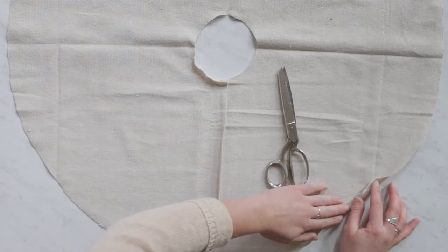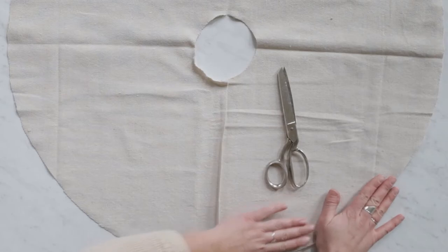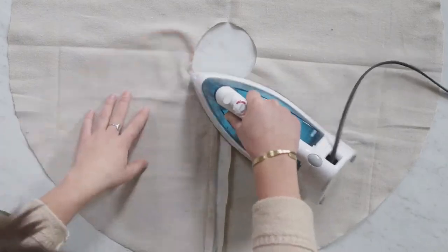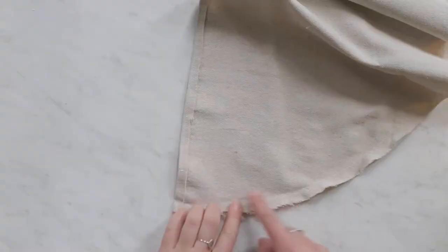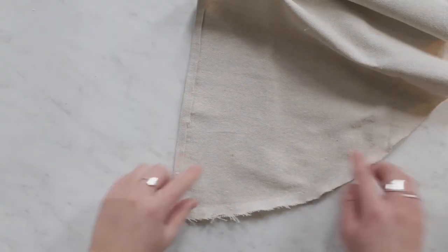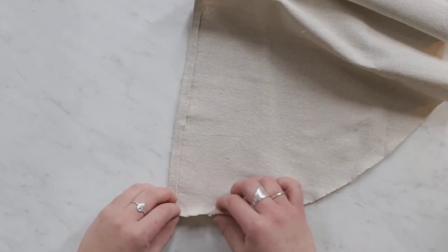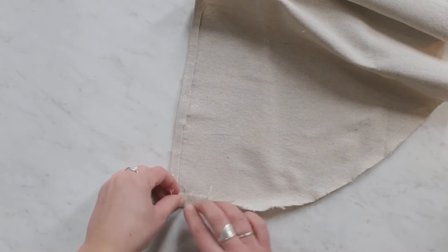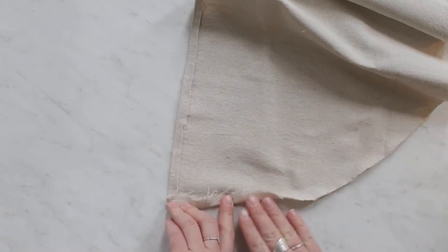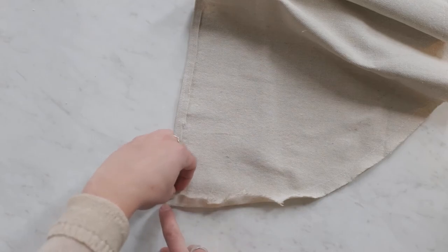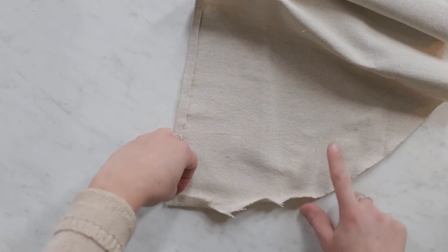Now along where I stitched on the outside edge, I'm going to iron in right along that stitch, and so I'm going to iron it along the whole edge. And then I'm going to go back and stitch again really as close to the edge as I can, and then I'll trim off the access.